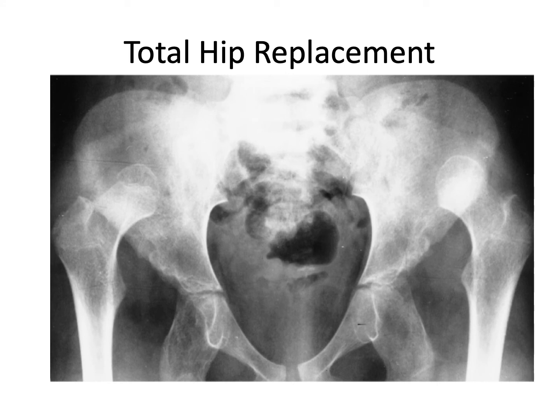In bilateral hip dislocation in a child older than 8, it is recommended not to reduce the hips as the failure rate is considerably high. The patient will walk with a waddling gait but with no pain. Later in life, when hip degeneration occurs, total hip replacement or arthroplasty can be performed with better results.